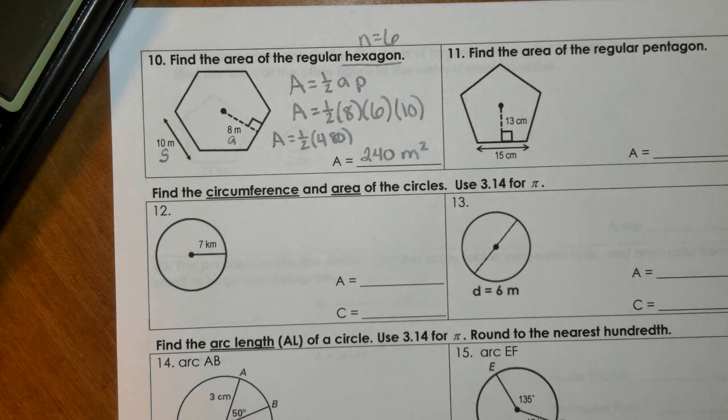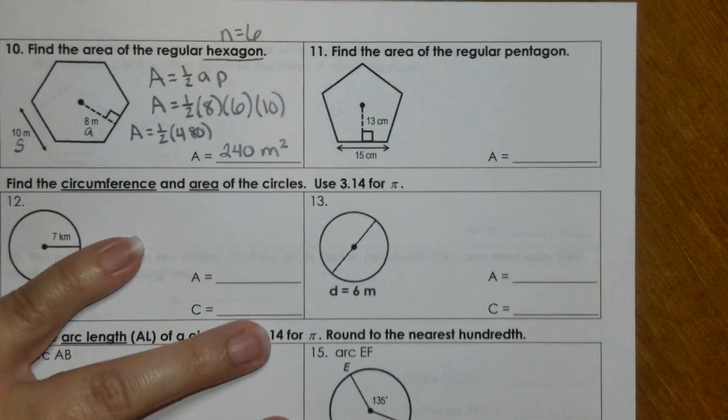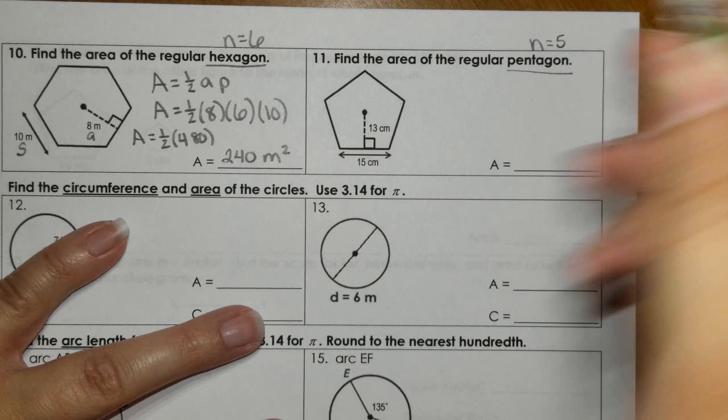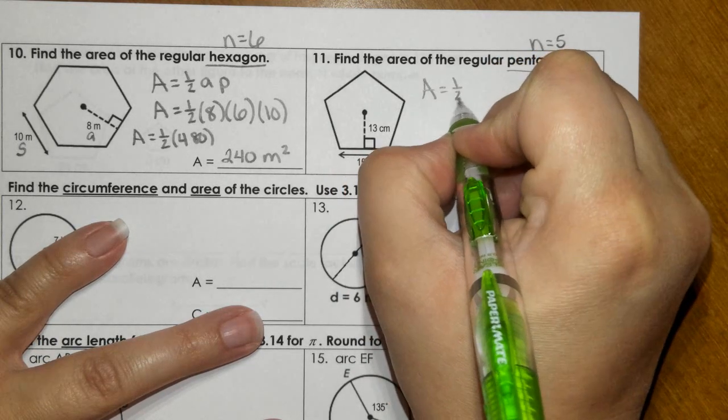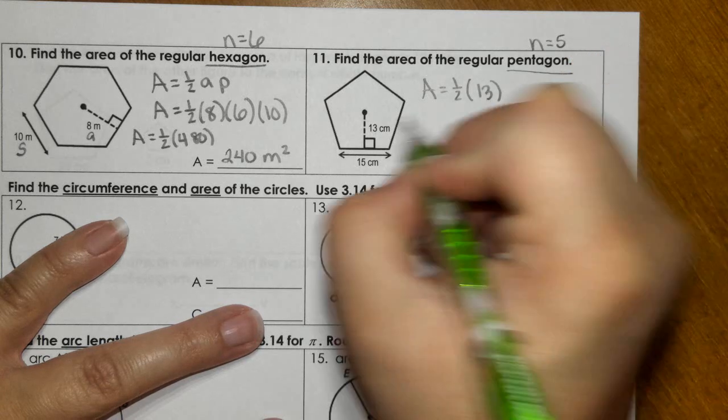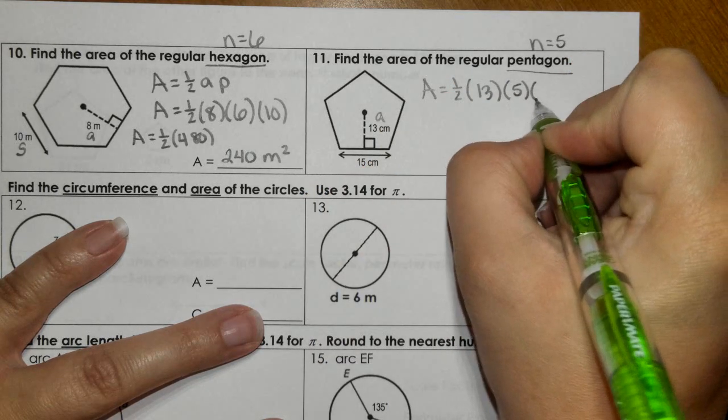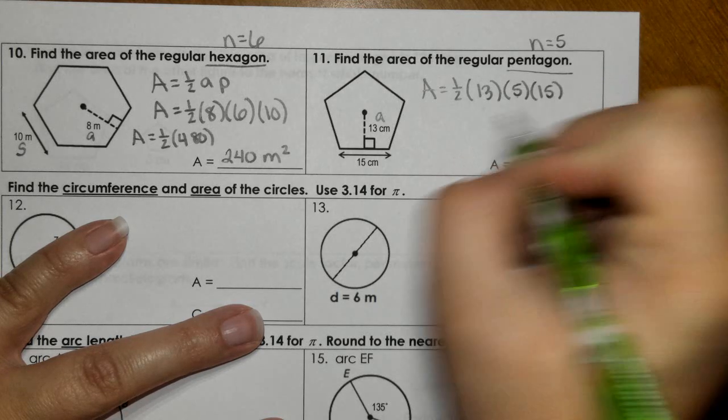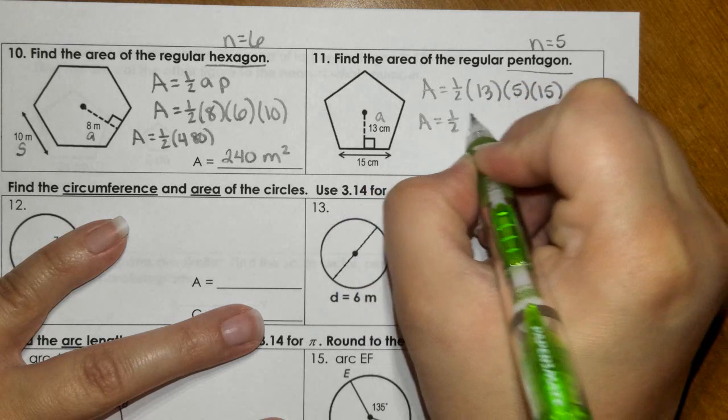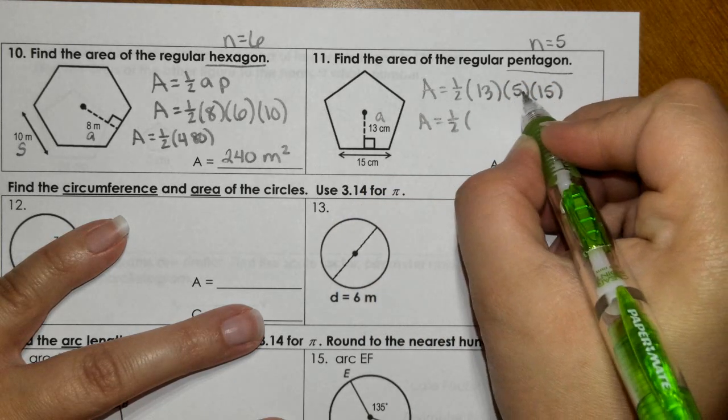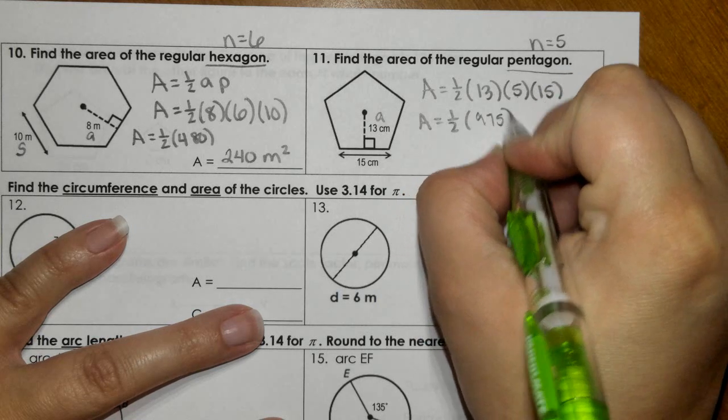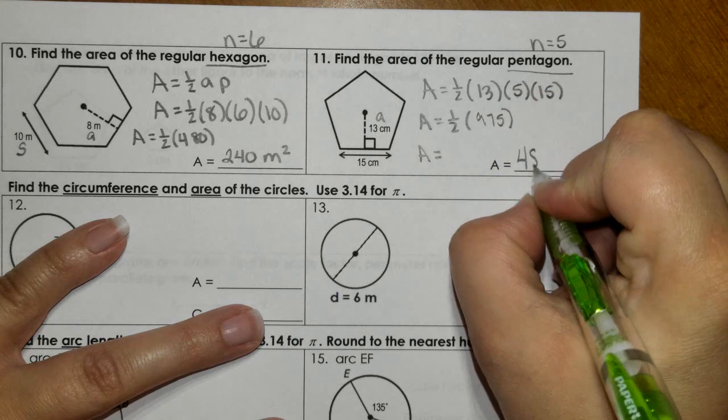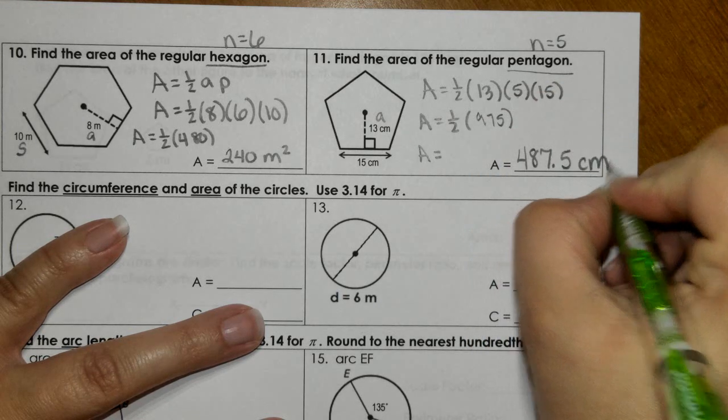Then in number 11, same formula. But we're given that this is a pentagon. So the number of sides now is 5. We would have one half times the apothem of 13. We have 5 sides for our perimeter, 5 times the side length of 15. If we multiply these together, 13, 5, and 15, we get 975. Taking half of that, we get 487.5 centimeters squared.